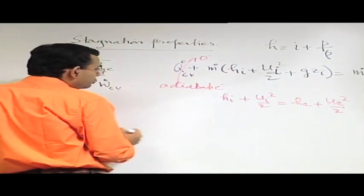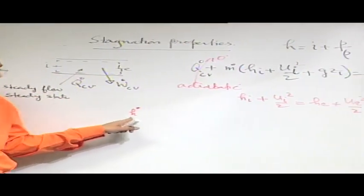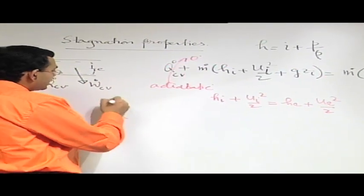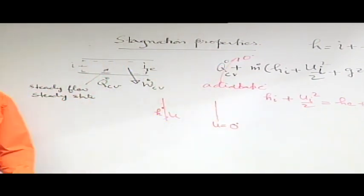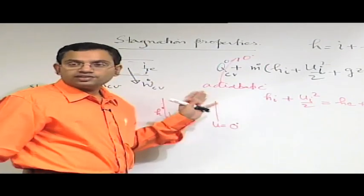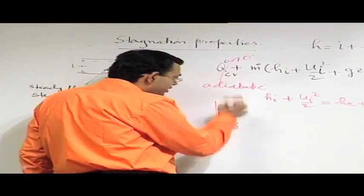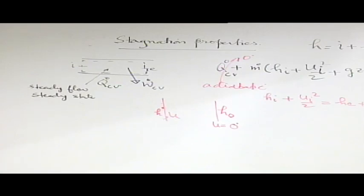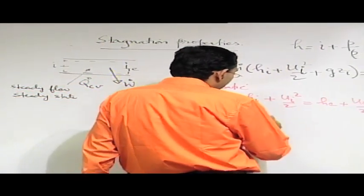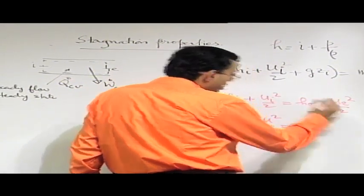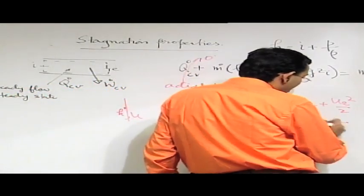Consider two sections: a generic section where specific enthalpy is h and velocity is u, and a special section where velocity is brought to zero — the stagnation section. The corresponding enthalpy there is h₀. From the energy equation: h + u²/2 = h₀, since at stagnation u = 0. This h₀ is known as the stagnation enthalpy.